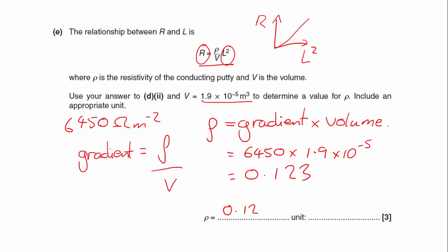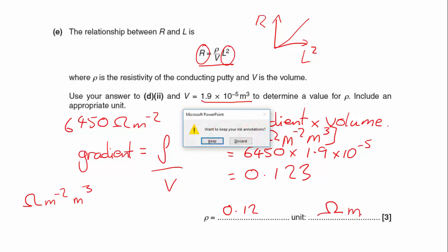If you don't know what it is already, the gradient was ohms per meter squared. So if I've got ohms per meter squared, and then they're going to be multiplied by meters cubed, ohms per meter squared multiplied by meters cubed, and that would give me a unit of resistivity of ohm meters.